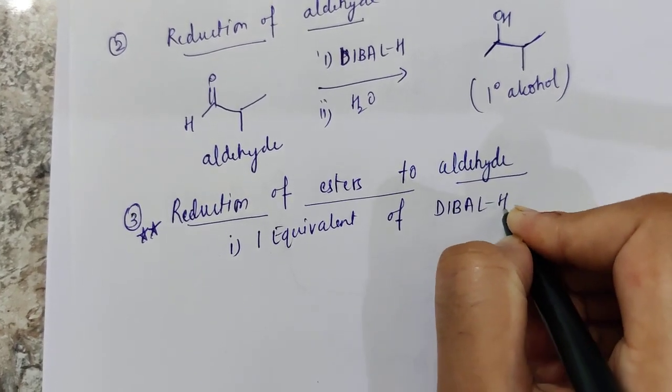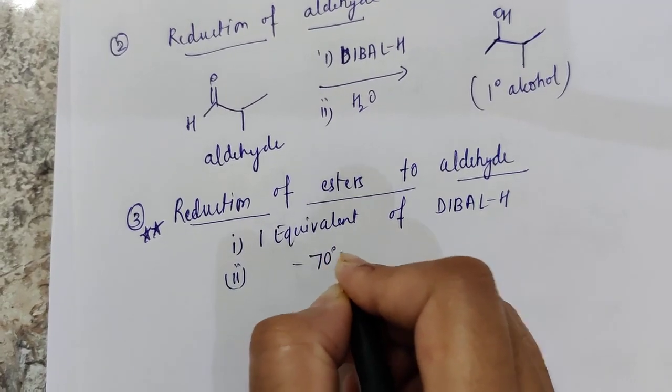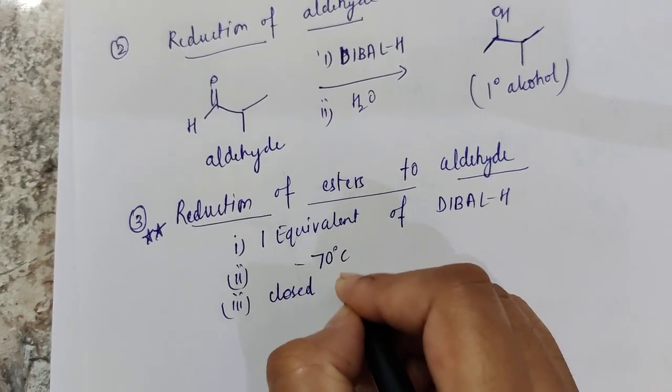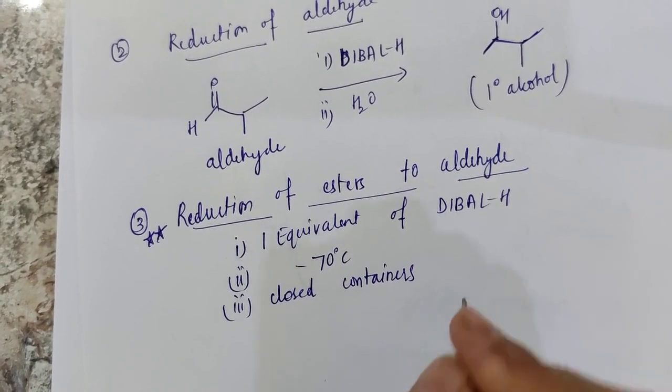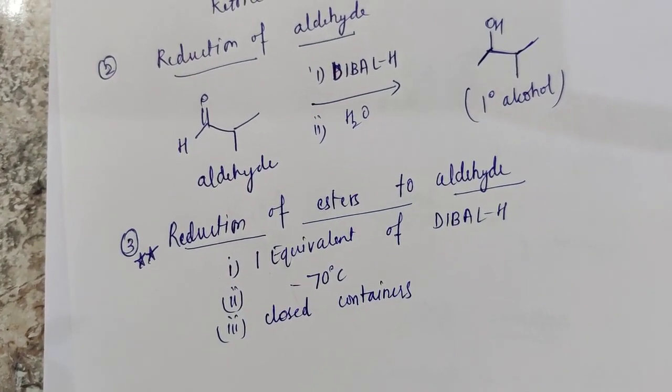Very first requirement is if you want to reduce one mole of ester then one equivalent of DIBAL should be added. Second temperature condition of minus 70 degrees is required. Third closed container.